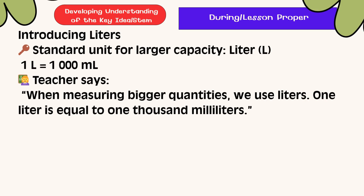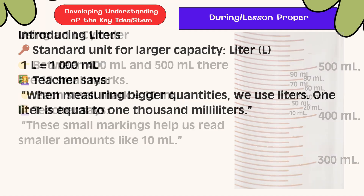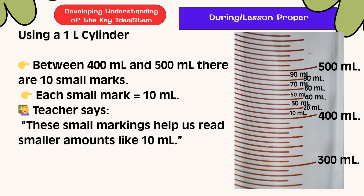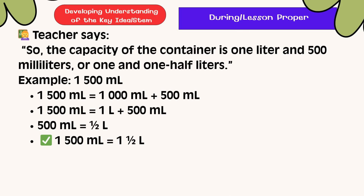Introducing Liters. The standard unit for larger capacity is the liter, or L. When measuring bigger quantities, we use liters. 1 liter is equal to 1,000 mL. Using the 1,000 mL graduated cylinder, the small markings help us read smaller amounts like 10 mL. Between 400 mL and 500 mL, there are 10 small marks, and each small mark equals 10 mL.